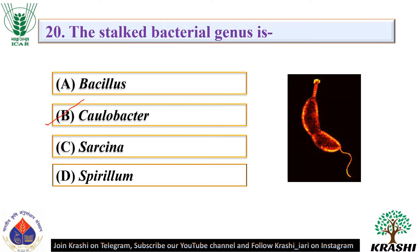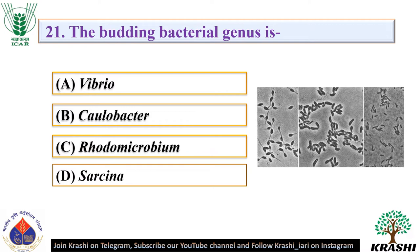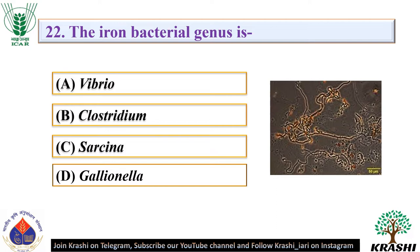Question number 21: The budding bacterial genus is. The correct answer is option C — Rhodomicrobium. Question number 22: The iron bacterial genus is. The correct answer is option D — Gallionella.